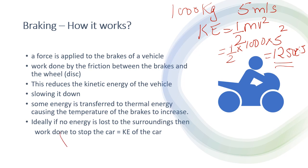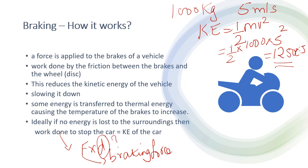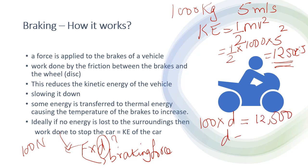Another question you can get is: work done equals force times distance moved, where the force is the braking force. They can give you the braking force and ask what distance the car will travel before it stops. If the braking force is 100 newtons, then 100 times distance equals 12,500, so D equals 12,500 divided by 100, which is 125 meters. This is how you find the stopping distance.